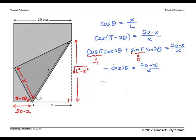Now cosine 2 theta is 2 cosine square theta minus 1 by the double angle formula. Now we can replace cosine theta by x over L as before.